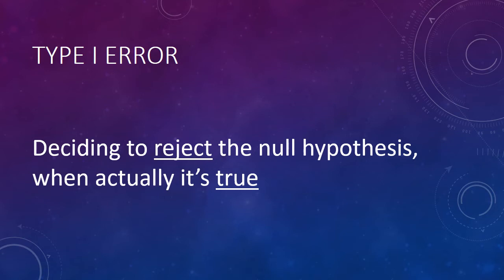Type I error is deciding to reject the null hypothesis, that is, saying that the null hypothesis is false when actually it's true.